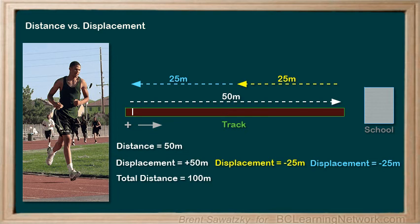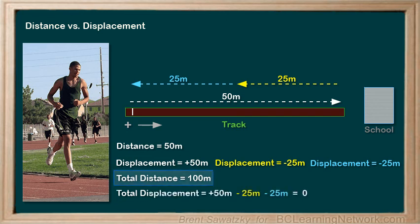The total displacement would be — remember that we are considering total displacement and that's the direct route from the start to the end. What if the start and the end are in the exact same position, like the starting line of the track? Well, the displacement, therefore, would have to be zero. The distance is 100 meters, but the displacement is zero.